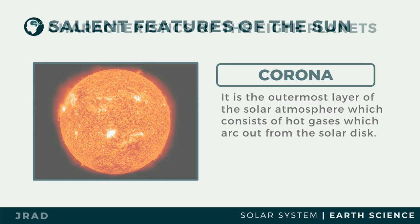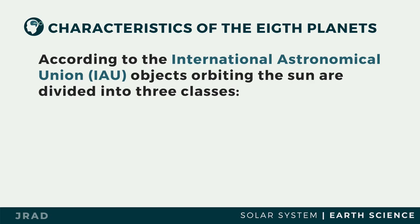The corona is the outermost layer of the solar atmosphere. It consists of hot gases which arc out of the solar disk, found in the outer part.